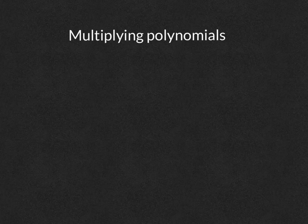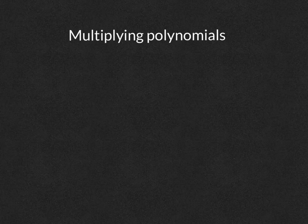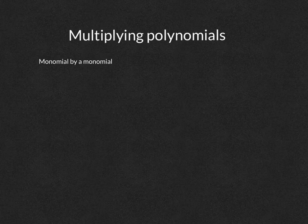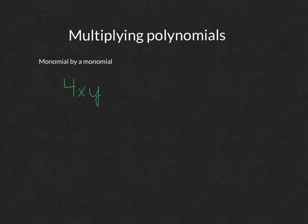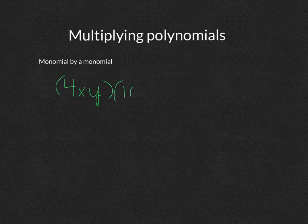Now that you know what a polynomial is, let's talk about how we can multiply polynomials by each other. The first type of multiplication I want to look at is a monomial by a monomial. A monomial is a polynomial with only one term. An example of a monomial would be 4xy — a term is combined using constants and variables with multiplication. Let's multiply that by another monomial: 10x squared y squared.